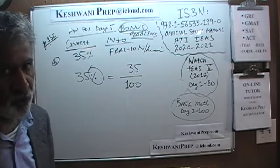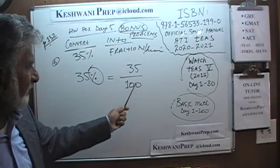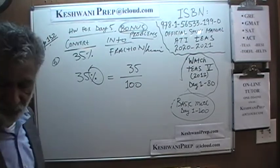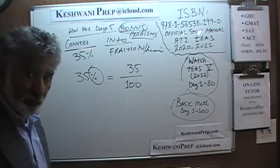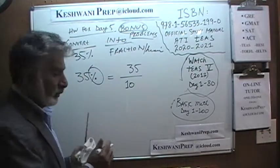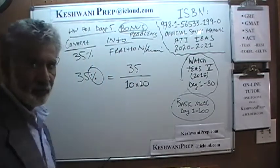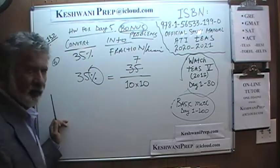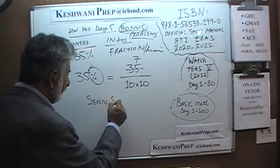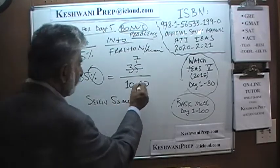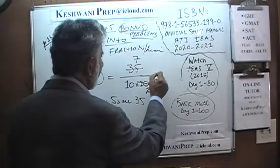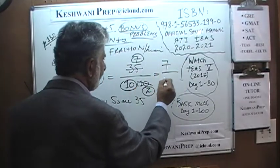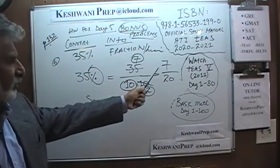If the answer is presented in reduced form and none of the answer choices match 35 over 100, then we reduce it. Do you find any common factor between 35 and 100? Yes — 35 and 100 share a common factor of 5. If you find 100 hard to deal with, write it as 10 times 10. Divide top and bottom by 5: 35 has seven fives, and 10 has two fives. So on top we get 7, and on the bottom 10 times 2, which is 20. We just converted 35% into the fraction 7 over 20.